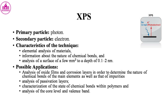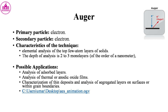Auger electron spectroscopy uses an electron primary particle and detects electron secondary particles. It provides elemental analysis of the top few atom layers of solids, with a depth of analysis of 2 to 3 monolayers. Applications include analysis of adsorbed layers, thermal or anodic oxide films, characterization of thin deposits, and analysis of segregated layers on surfaces or within grain boundaries.